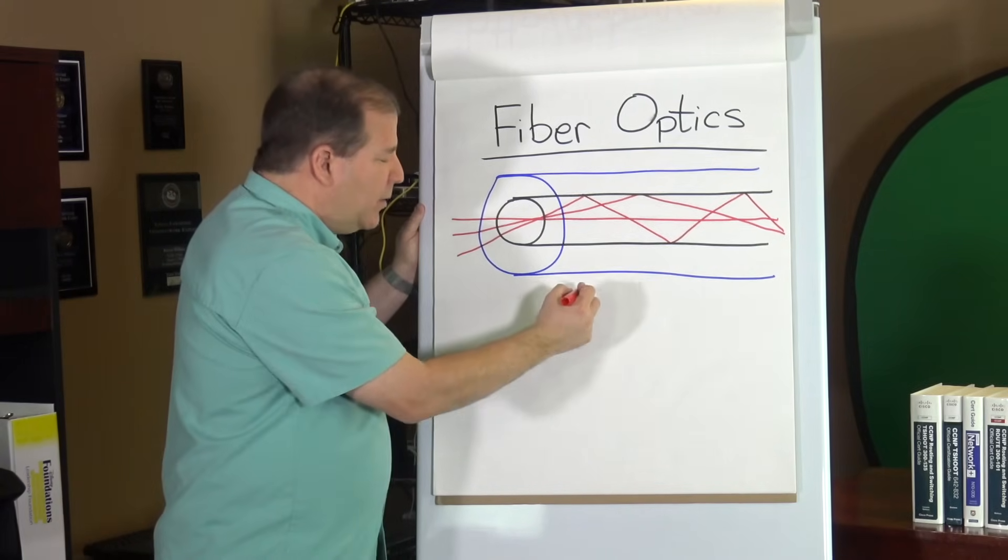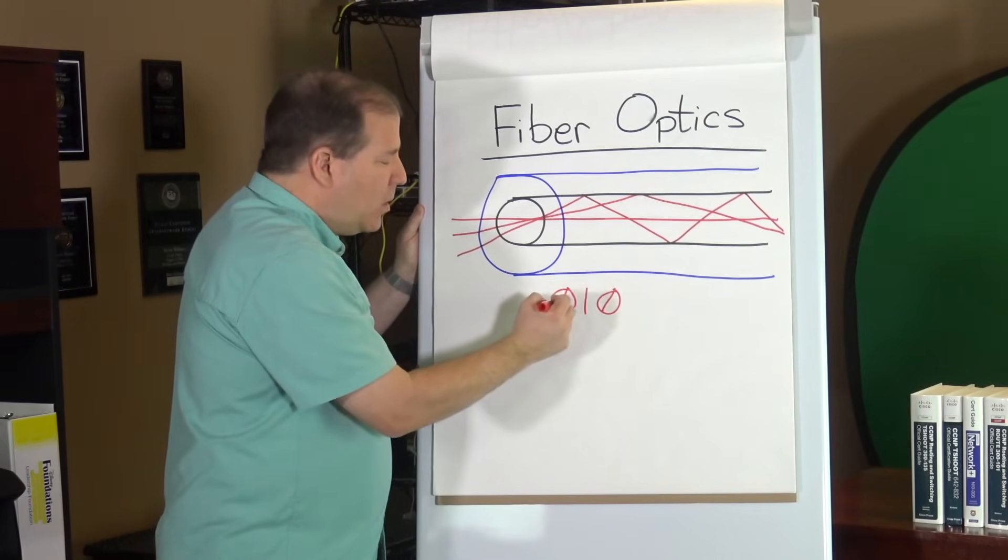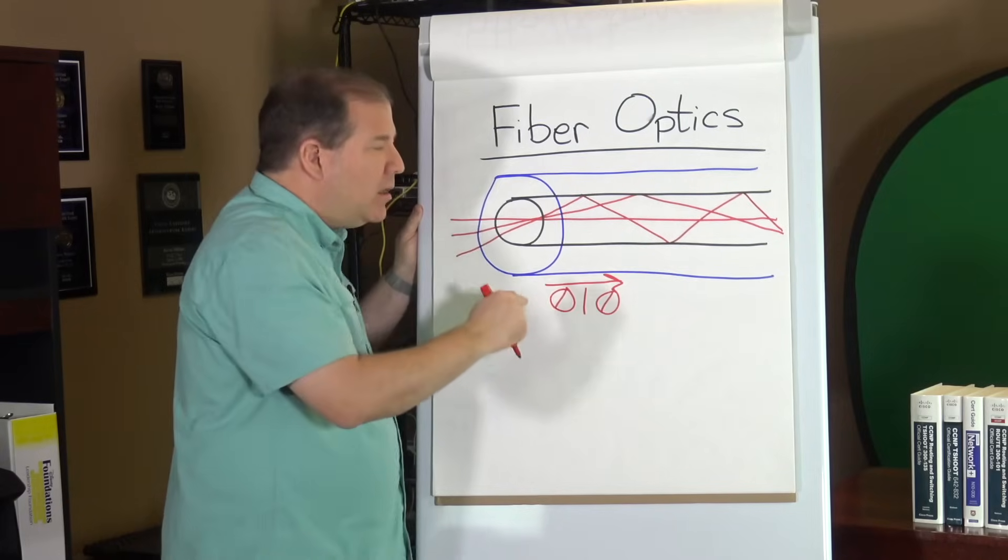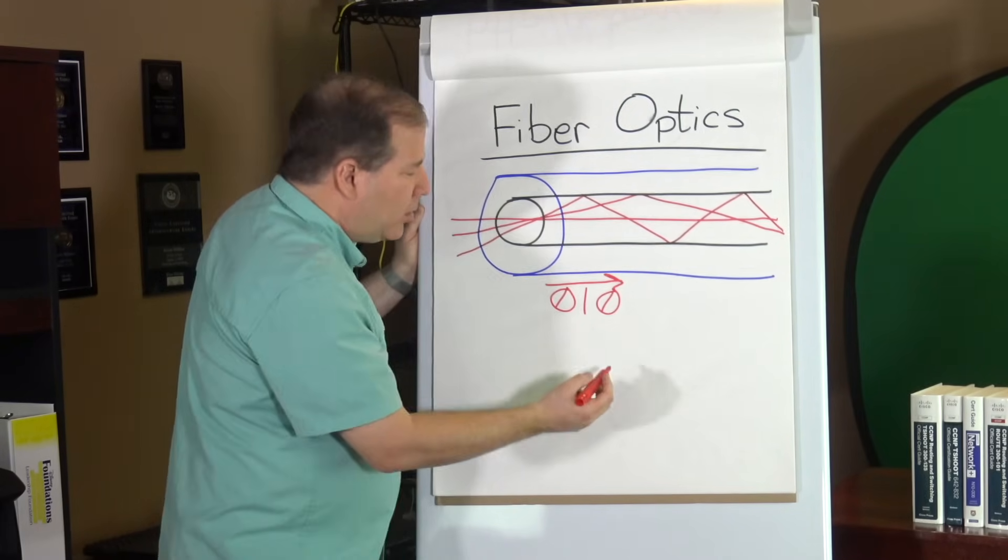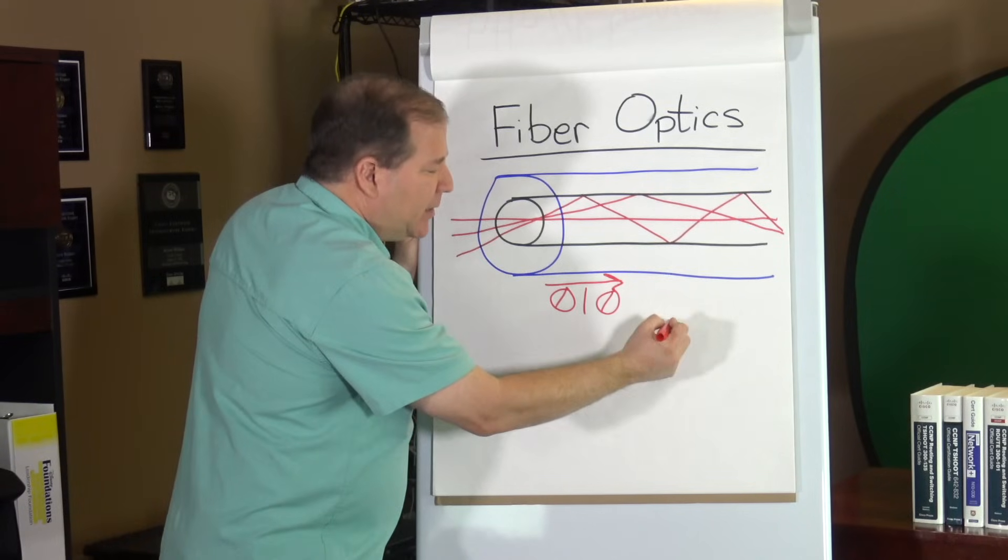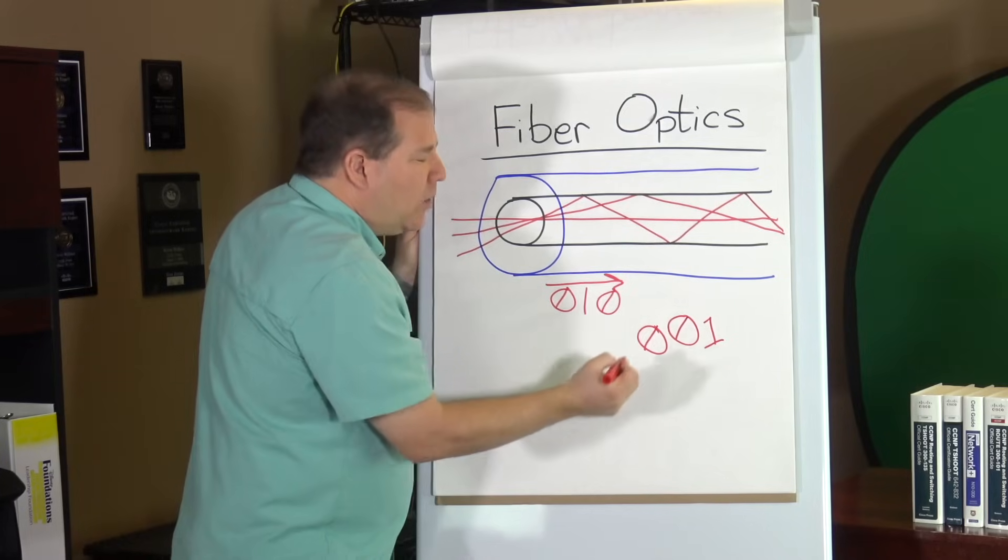Maybe the data originally was we had a zero, we had a one, we had another zero, and we're going in this direction. Because of all the different modes of propagation, it actually might arrive out of order. It might arrive as something like one, zero, zero. We've corrupted our data.